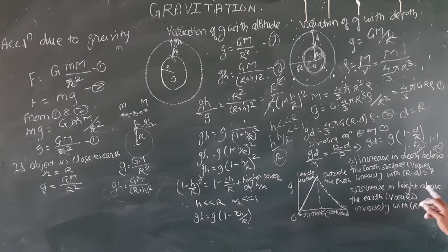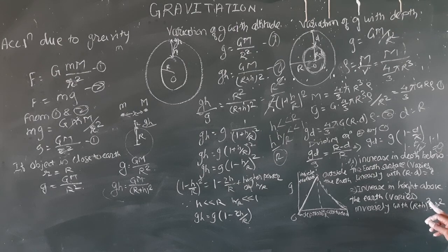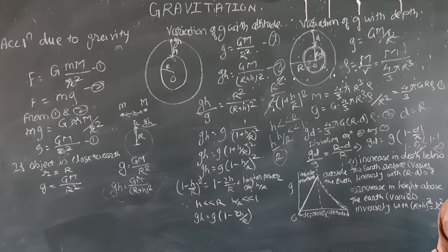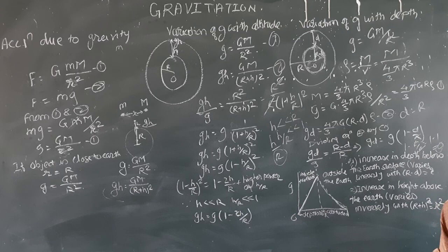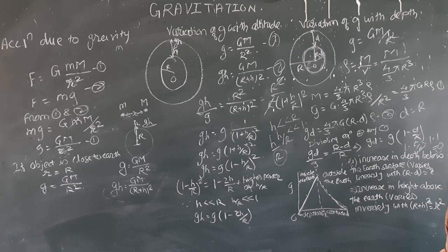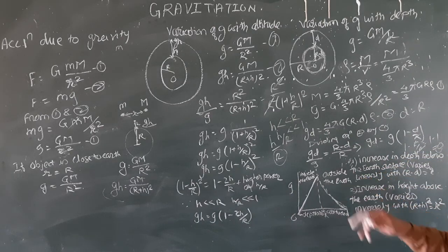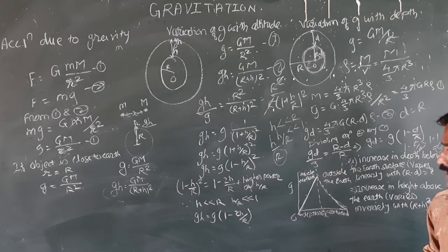The acceleration due to gravity on the surface of the earth is g equal to GM upon R square. As we move above the earth's surface, the acceleration due to gravity decreases. And as we move inside the earth's surface, the acceleration due to gravity also decreases. Thank you.